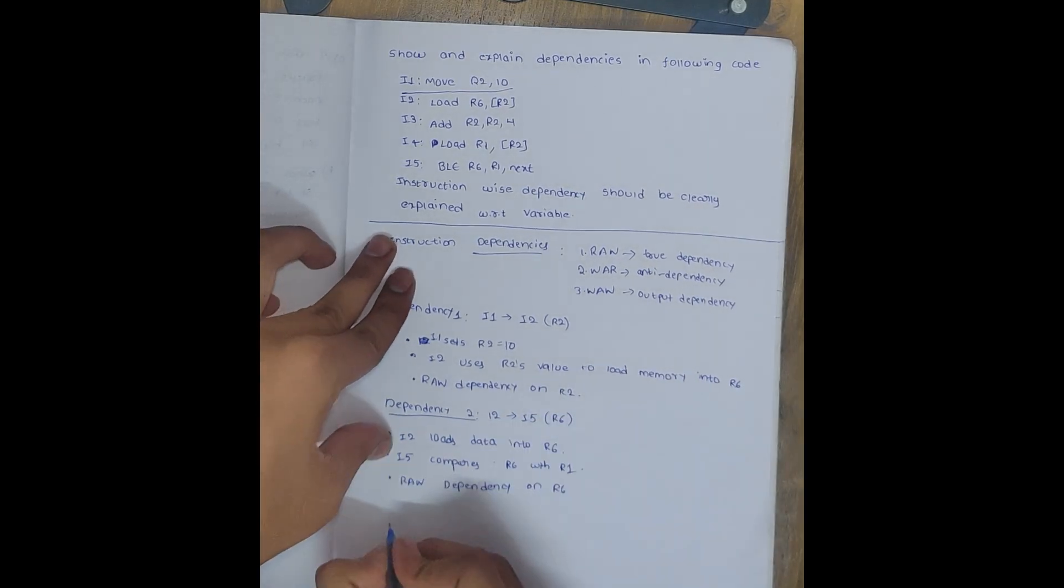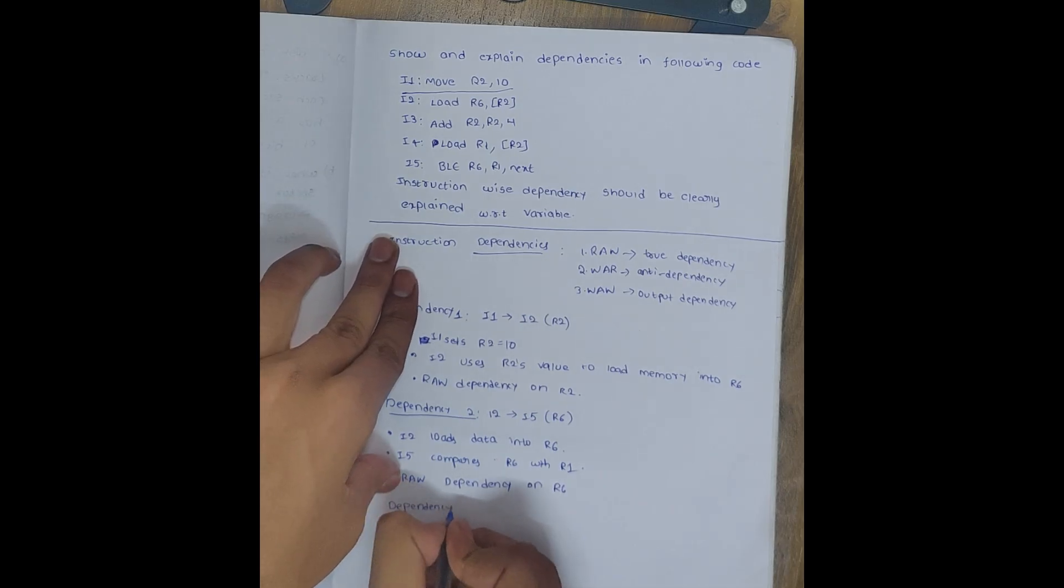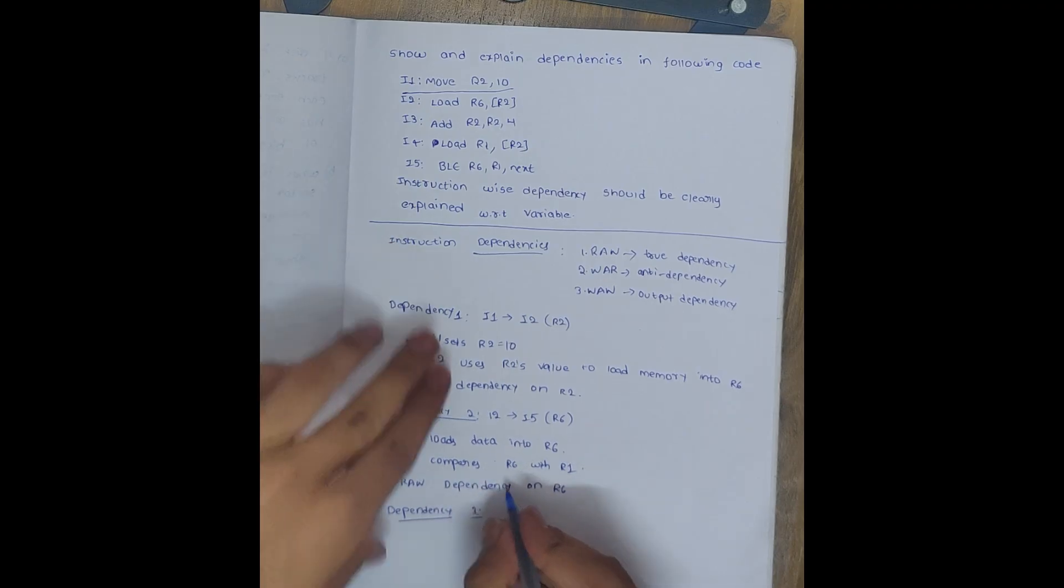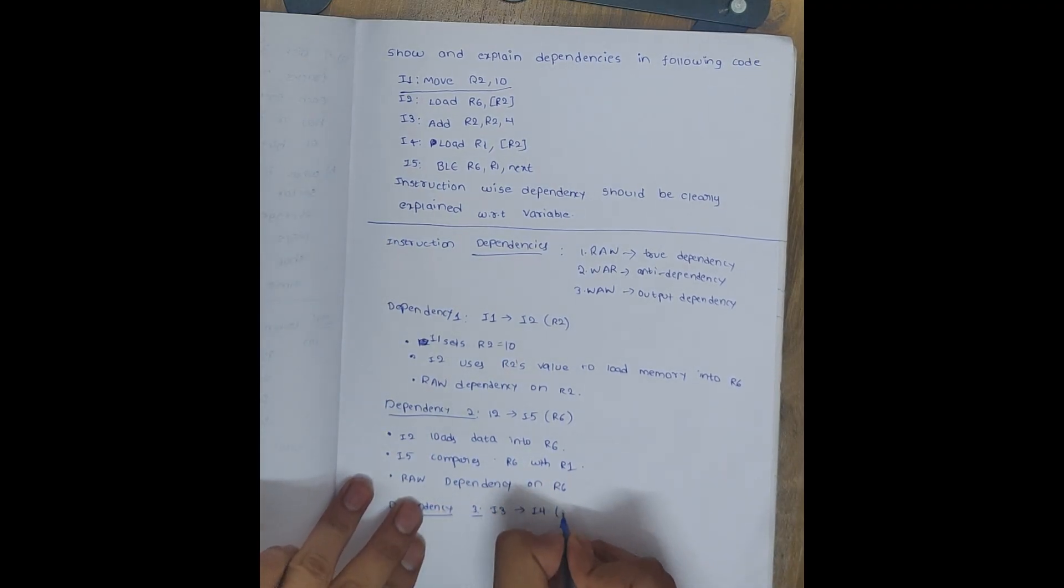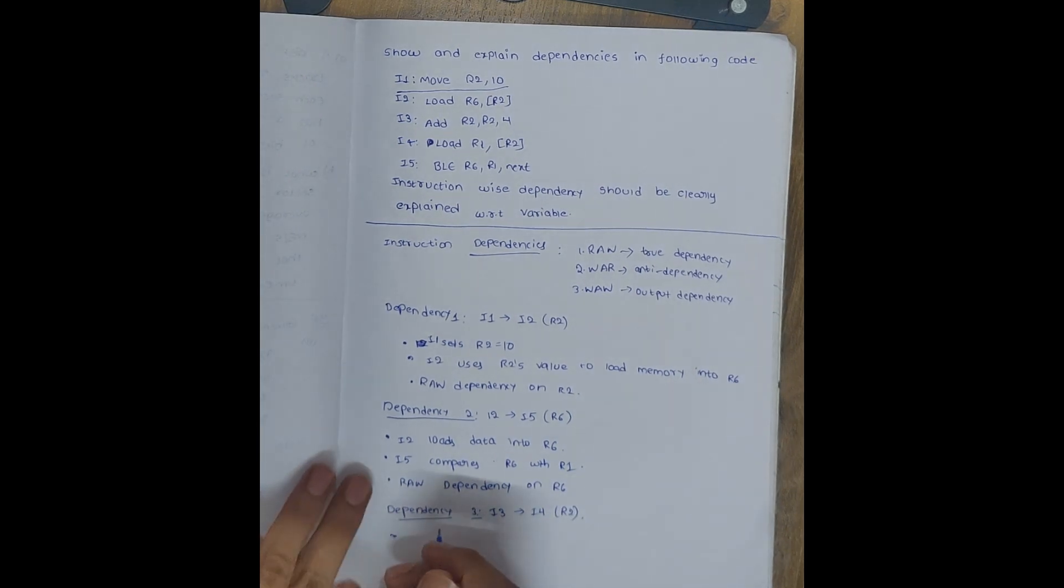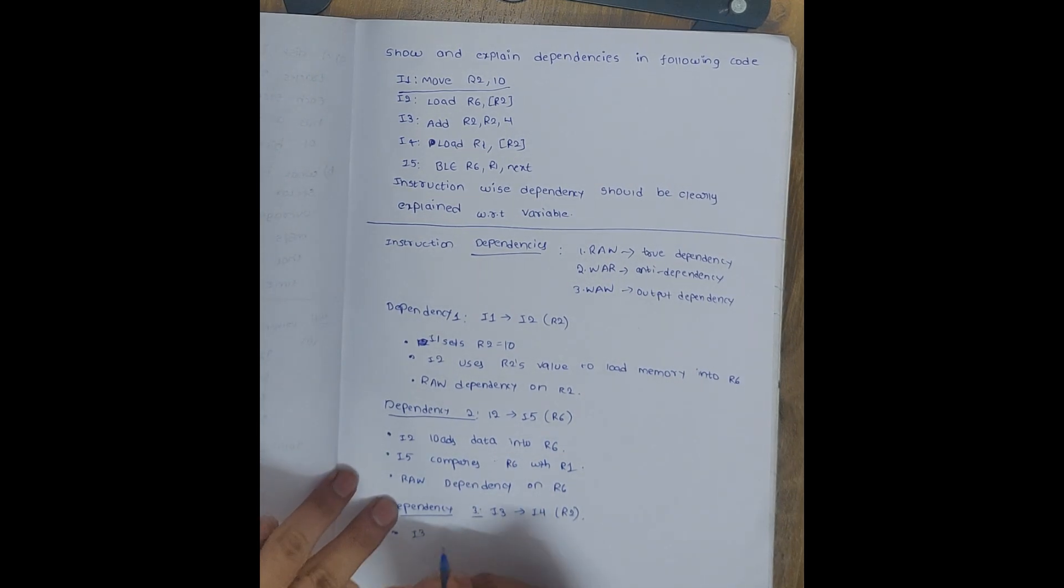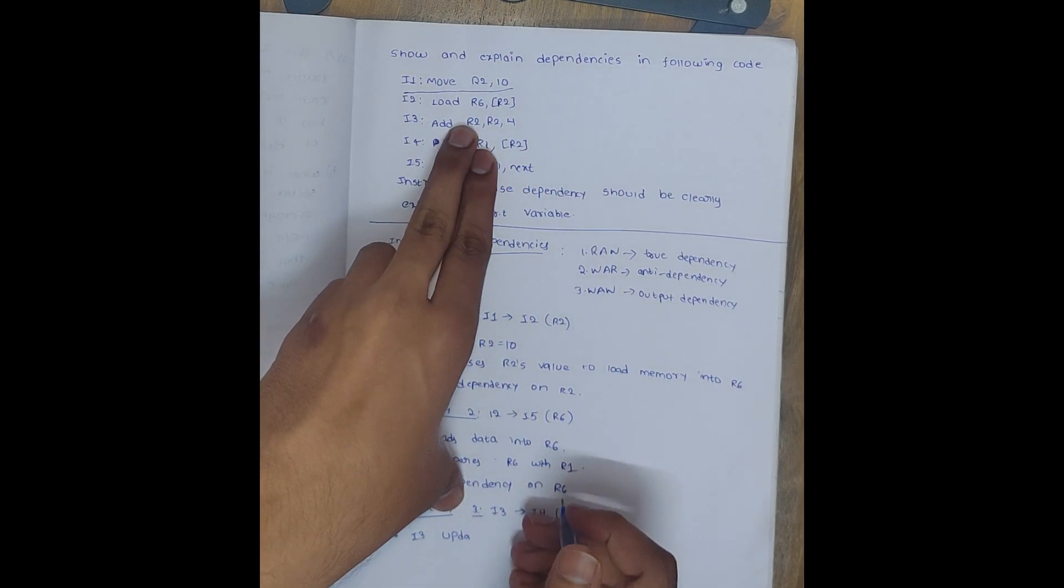Dependency 3 is from I3 to I4. How it works: it depends on R2 mainly. So first of all, what is I3 here? I3 updates R2. I3 updates - it is adding R2 plus R2 plus 4 - R2 plus 4 updates.